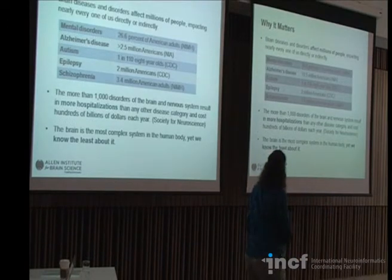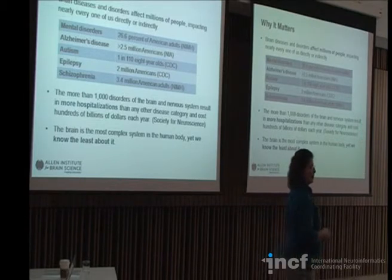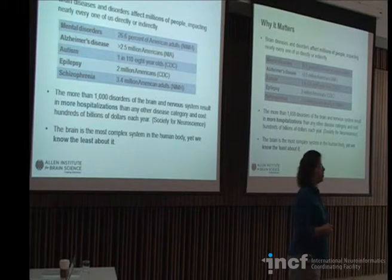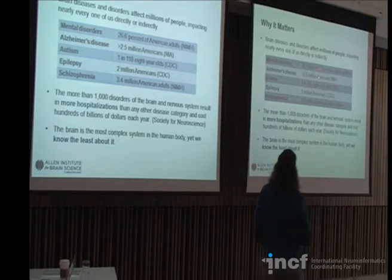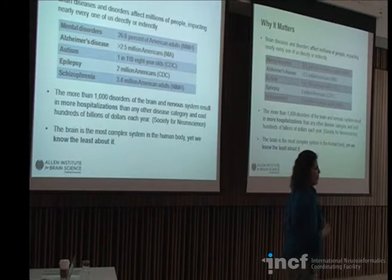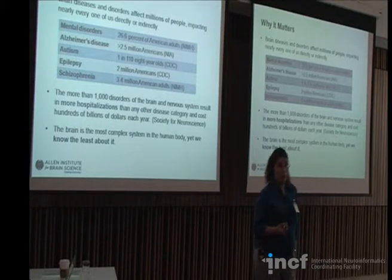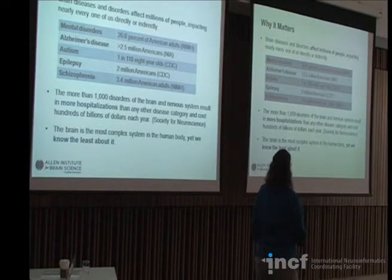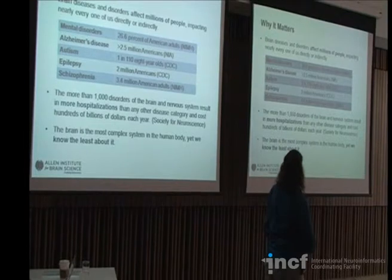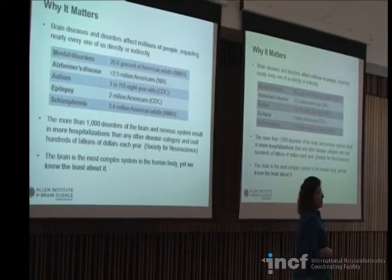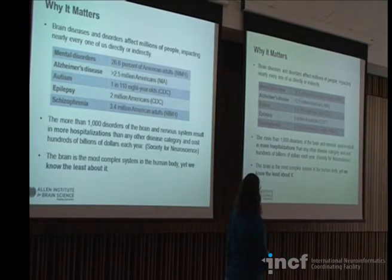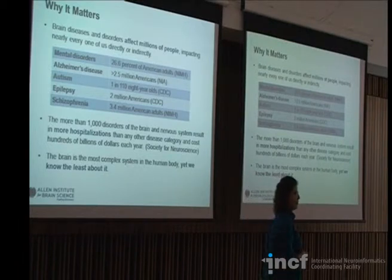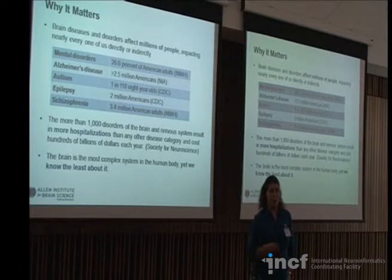Why does this matter? Over one out of four American adults suffer from some sort of mental disorder, whether it be depression, bipolar, schizophrenia, autism, or Alzheimer's disease. There are more than a thousand disorders of the brain and nervous system, and they result in more hospitalizations than any other disease category. And yet we know the least about the brain. So our goal is helping to understand how the brain functions so that disease models can flourish.